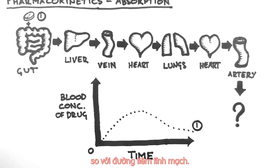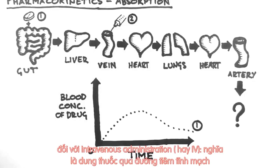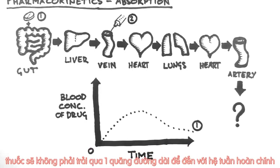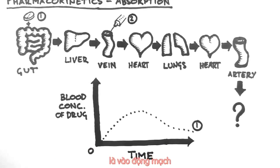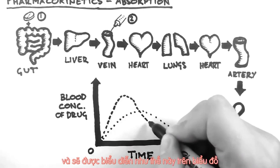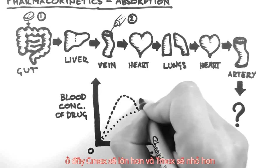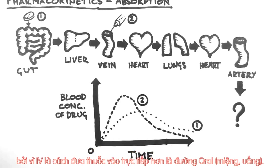We will now contrast that with intravenous administration. Assume that we give the same dose of the drug intravenously, and this drug does not undergo first-pass metabolism. In intravenous or IV administration, the drug doesn't have quite such a long journey to reach the arterial circulation, as it only has to go to the heart, the lungs, back to the heart, and then to the arteries. This results in a quicker rise of drug concentration. Note that the C-max is larger and the T-max is smaller, even though the dose was the same. This is because IV is a more direct route of administration than orally.